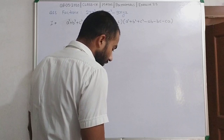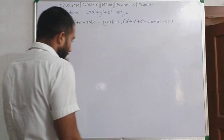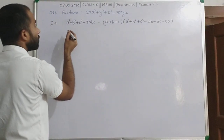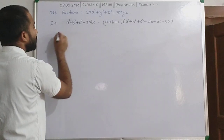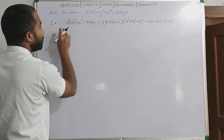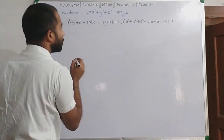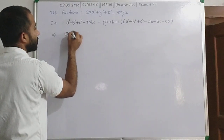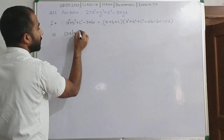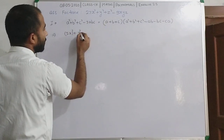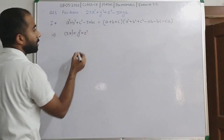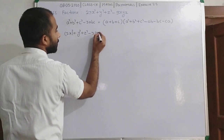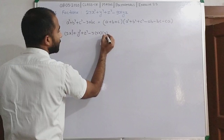तो इस identity से हम इस question को solve करेंगे. सबसे पहले question को left hand side से compare करना पड़ेगा. 27x cube को whole cube में हम 3x का whole cube लिख सकते हैं. So: (3x)³ plus y³ plus z³. तो minus 3abc में a की value 3x, b की value y, और c की value z आ गई.